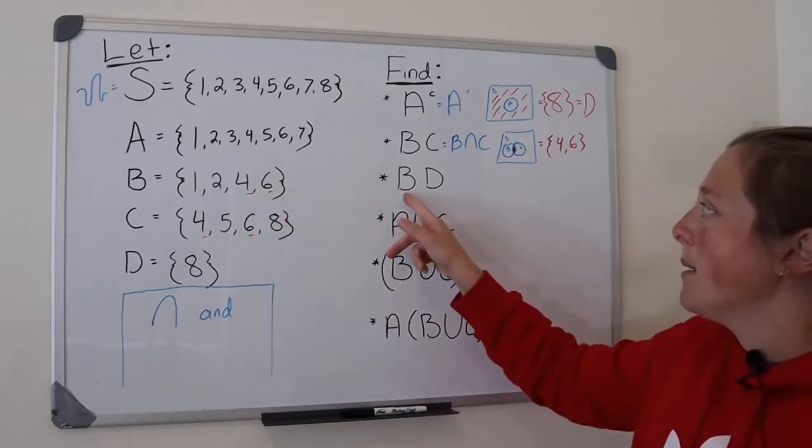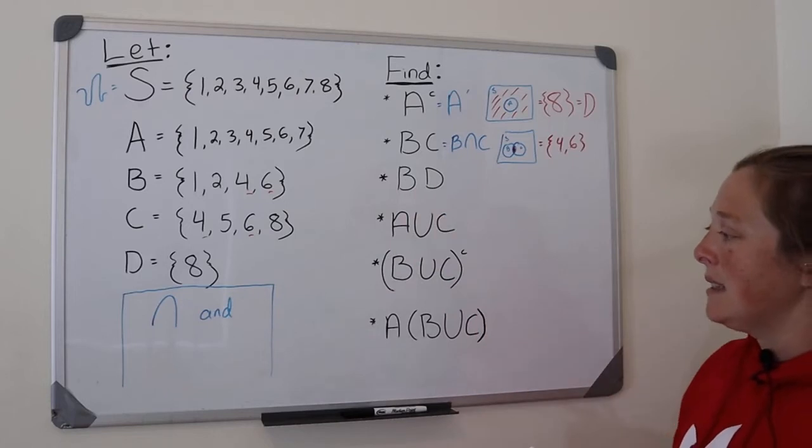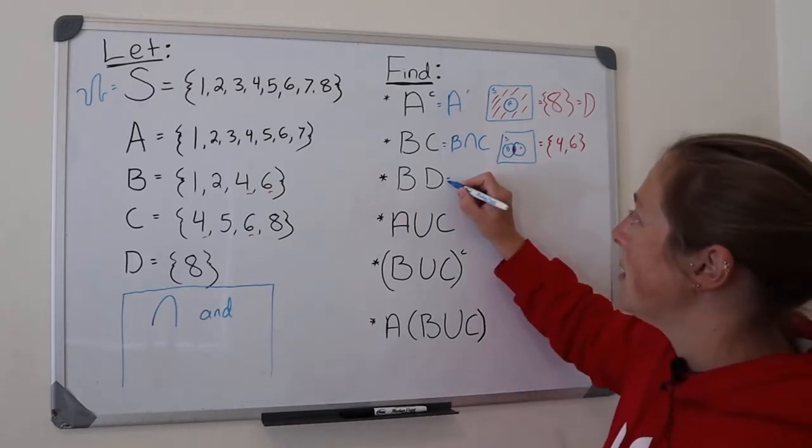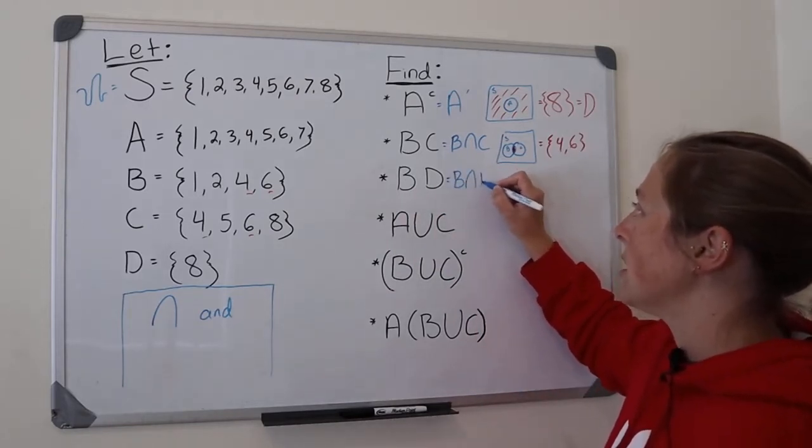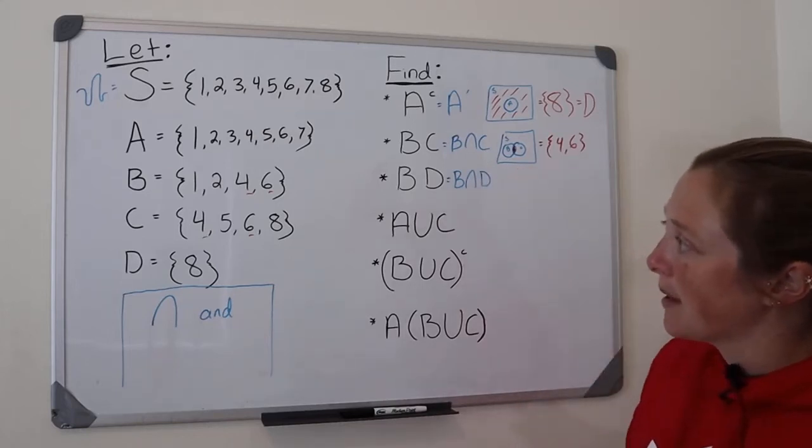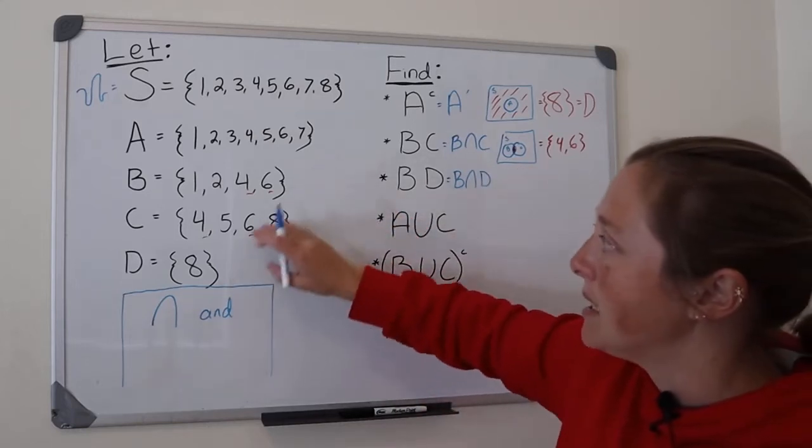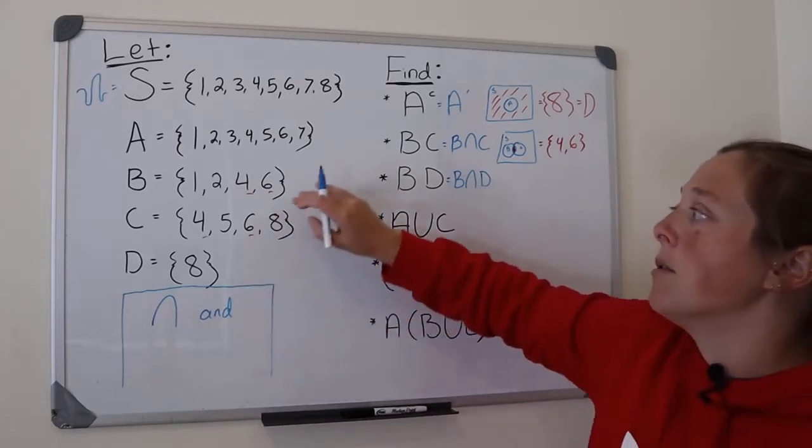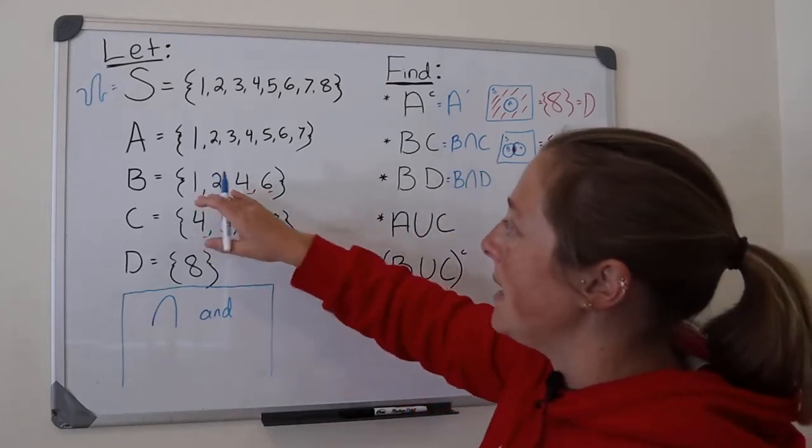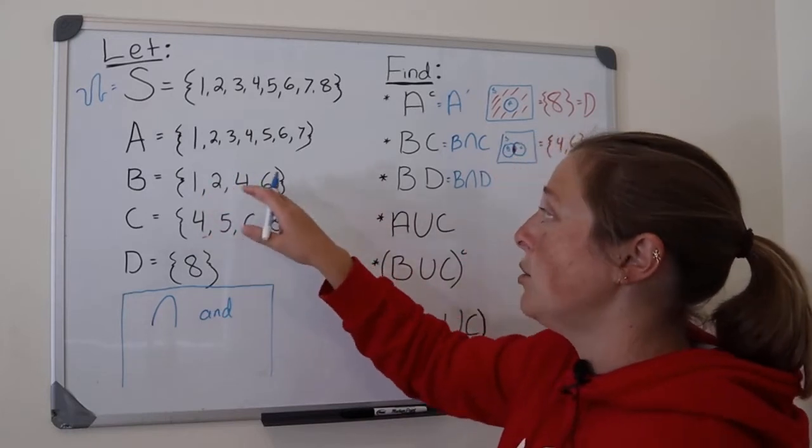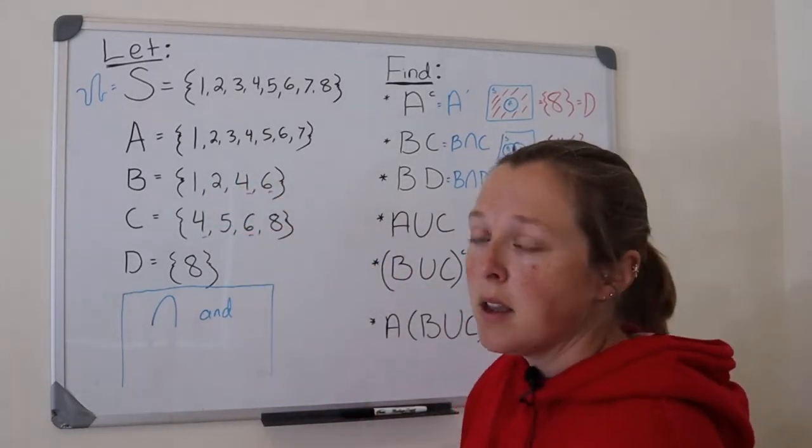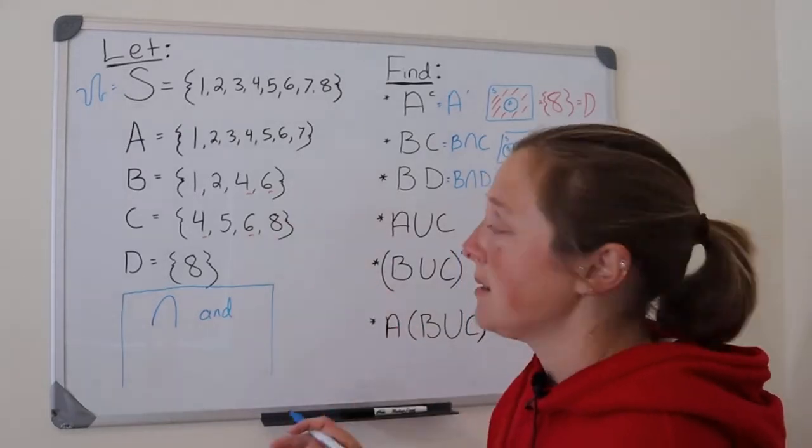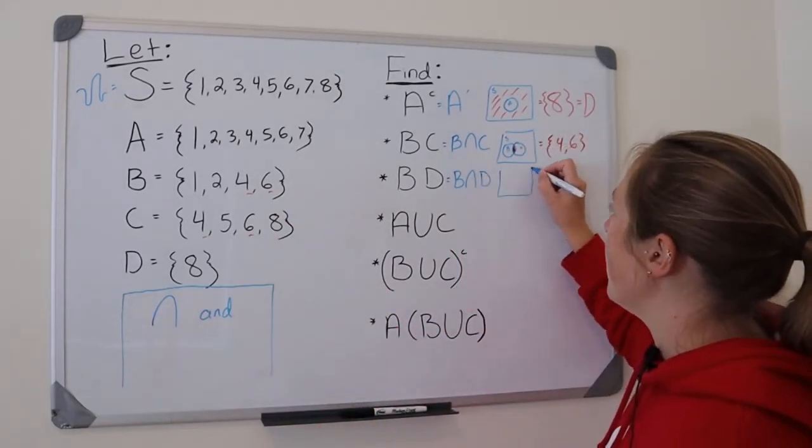What about B and D? This can be written as B intersection D. Are any elements both in B and D? No, because B has numbers one, two, four, and six, and D just has eight. So they share no elements. If you were to draw this, here's our sample space, here is B, here is D. They share nothing in common.